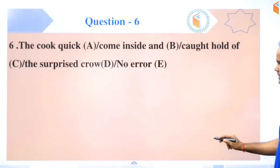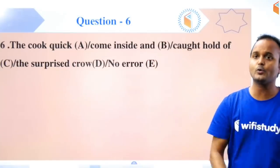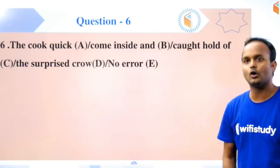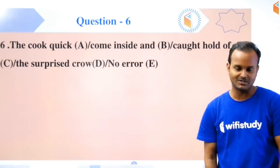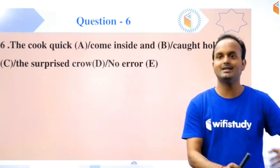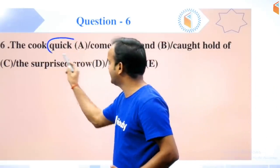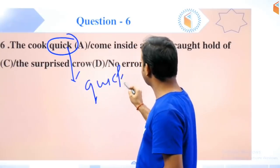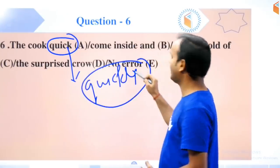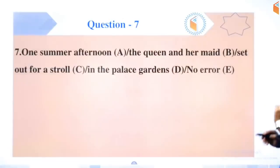Question number six: 'The cook quick come inside and caught hold of the surprised crow.' Very good, very easy question. You all know that to qualify a verb, we need an adverb. So not 'quick' - it should be 'quickly'. 'Quick' is an adjective, we need an adverb. So the adverb would be 'quickly' - that's the right option.